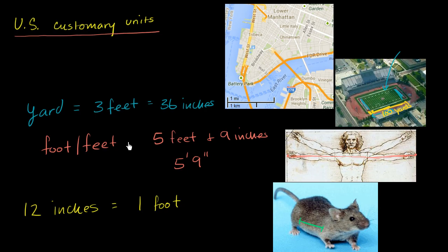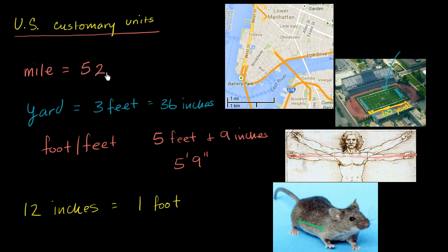If you want to measure even longer distances, that's where we go to the mile. All of these units are ancient, going back thousands of years. The mile was even used in Roman times, and it comes from the same root word as 1,000 — from 'mil,' meaning 1,000 footsteps of a Roman soldier. A standard mile is exactly 5,280 feet. To get a sense of a mile, here's a mile on a map of New York — this distance right here on Manhattan is about a mile.